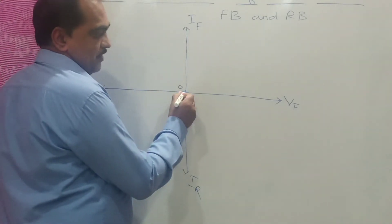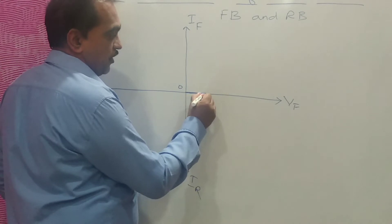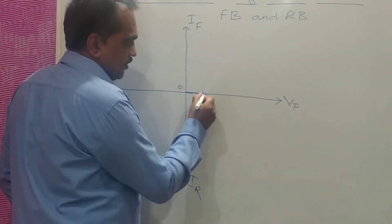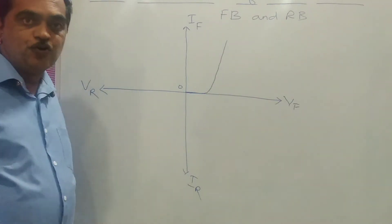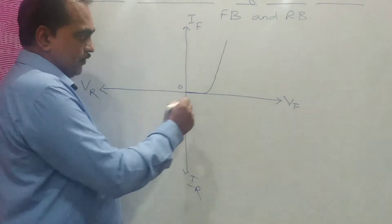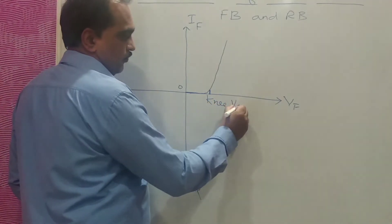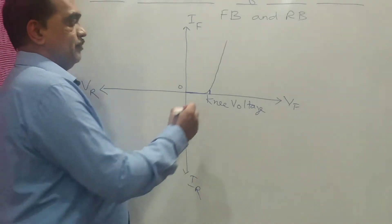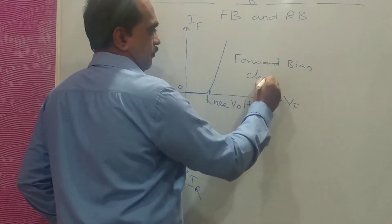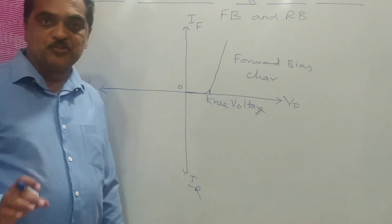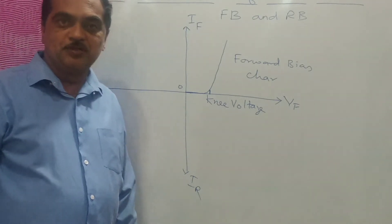That means, as you increase the applied voltage, there will be no current flowing in the diode. And at some stage, that is the knee voltage, there will be current flowing in the diode for a small increase in voltage. The particular voltage at which this happens is known as knee voltage, and this will be your forward bias characteristics of Zener diode. It is the same as your conventional PN junction diode, where the knee voltage is 0.7V for silicon and 0.3V for germanium.